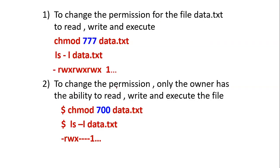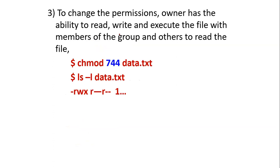These are examples dealing with absolute mode. To change the permission for the file data.txt — giving read, write, execute permission — use chmod followed by the permission number and data.txt. For example, chmod 700 gives all permissions only to the file owner, with no permissions for group or others. The first digit represents the file owner, the second digit represents the group owner, and the third digit represents other users.